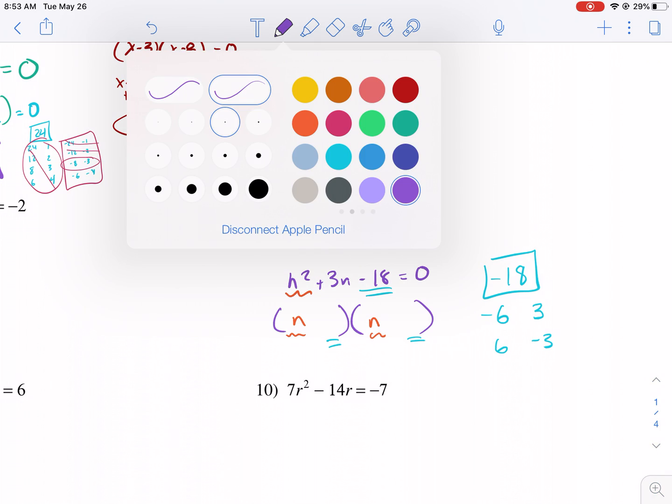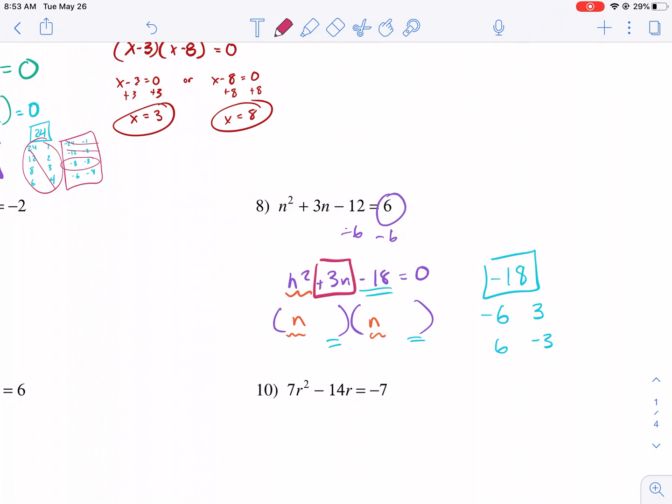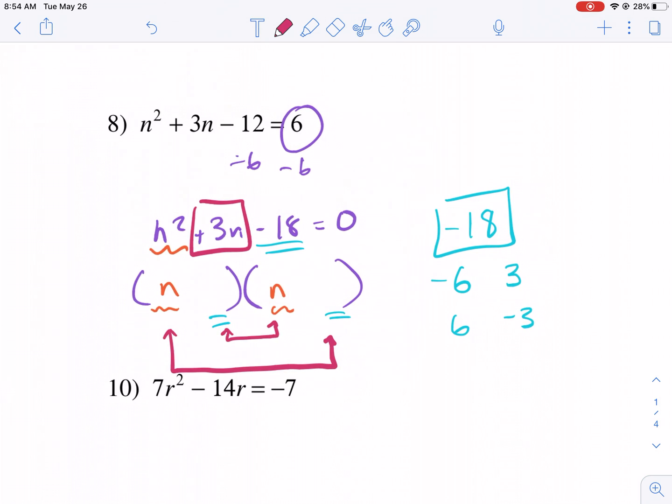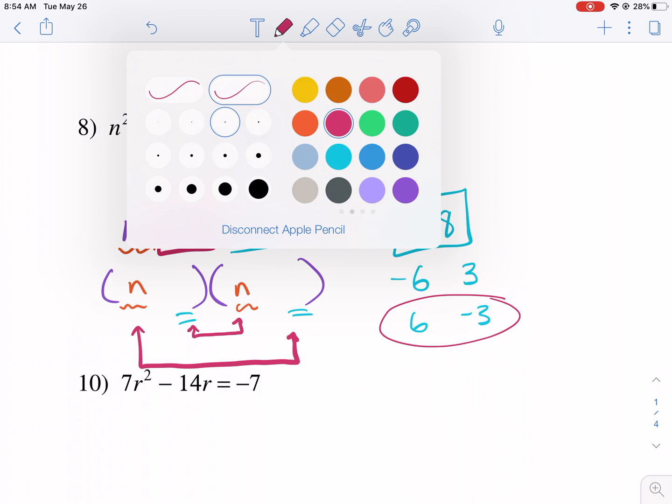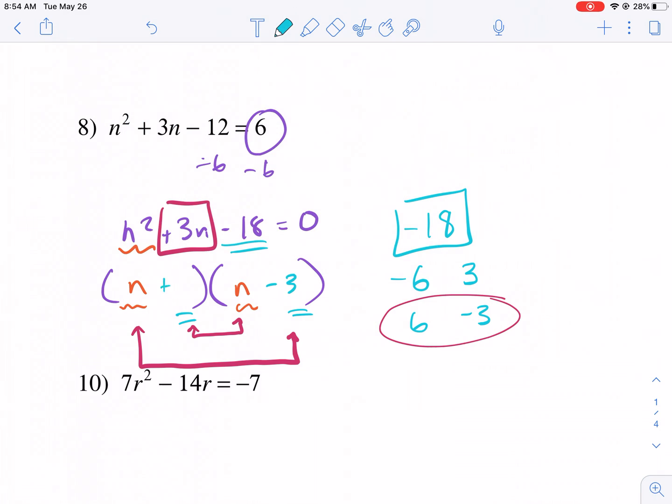That means the bigger number needs to be the positive, and the smaller number needs to be the negative because the middle term is a sum of the outside and the inside terms. So it looks like we already have our answer. I was going to list more factors of negative 18, like 9 and 2, etc. But we have our factors here because this has a sum of positive 3. So I know it's going to be minus 3 and plus 6. And that equals 0.